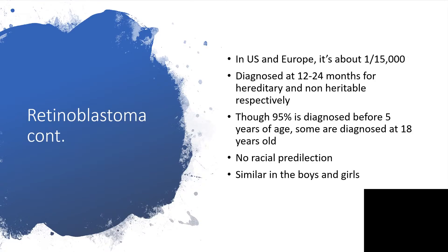In the United States and Europe, it's about one in every 15,000 live births. It's diagnosed at ages 12 to 24 months for hereditary and non-hereditary respectively — those with hereditary or familial cases will be diagnosed earlier compared to those that are non-familial. Though 95% is diagnosed before age 5, some are diagnosed later in life, as old as 18 years old. There is no racial predilection, and it is similar in both boys and girls.